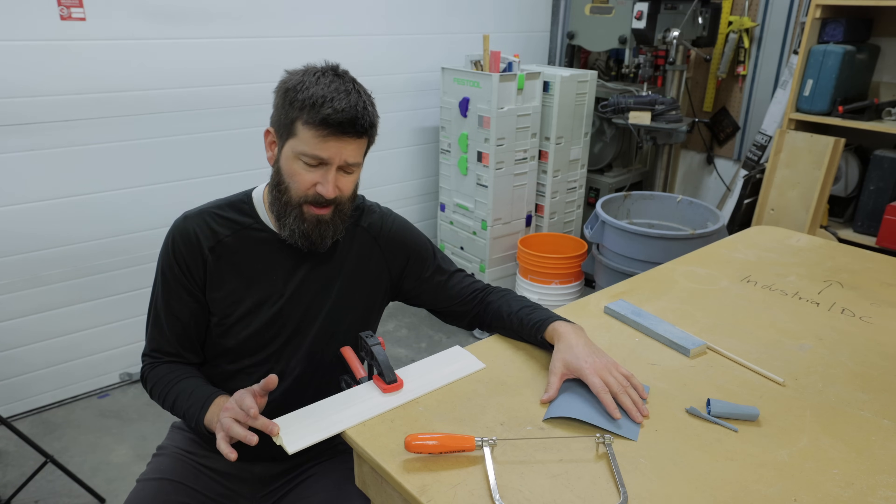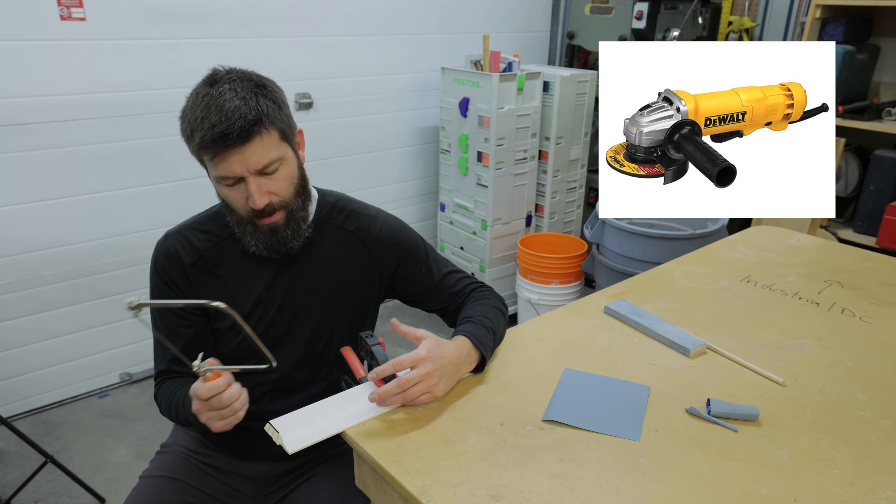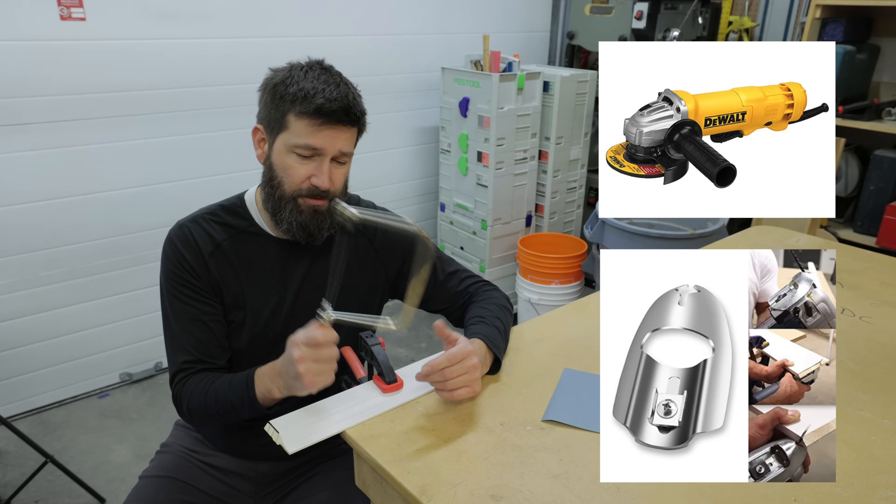So when it comes to actually making the cut, you're going to need something to do that. You can use a coping saw, an angle grinder, or a Collins foot for your jigsaw.